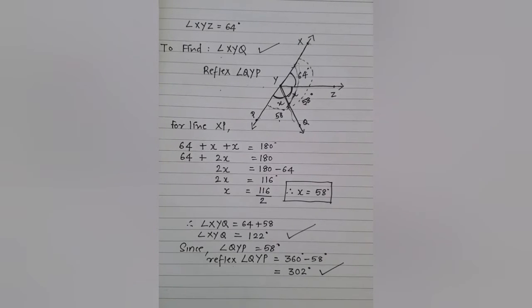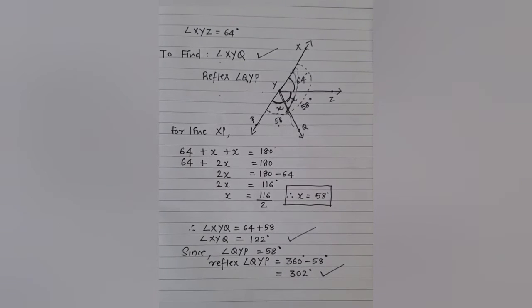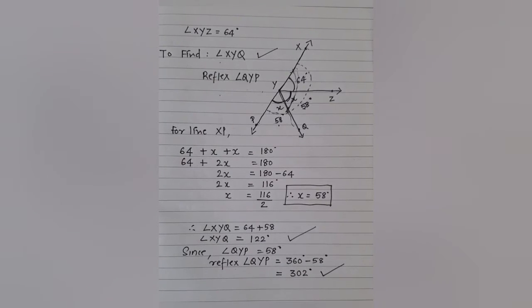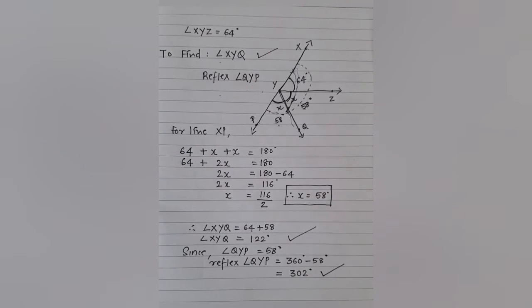So we have found what is XYQ, that is equal to 122 degrees, and what is reflex of angle QYP, which is equal to 302 degrees. This was solution to question number 6. Dear students, with this we come to the end of Exercise 6.1. Please practice all the questions of Exercise 6.1 in your notebook. You may practice it 2 to 3 times, because the more you practice, the better you will get. This is all for today's session. Take care of yourself until we meet next time with another session. Thank you.